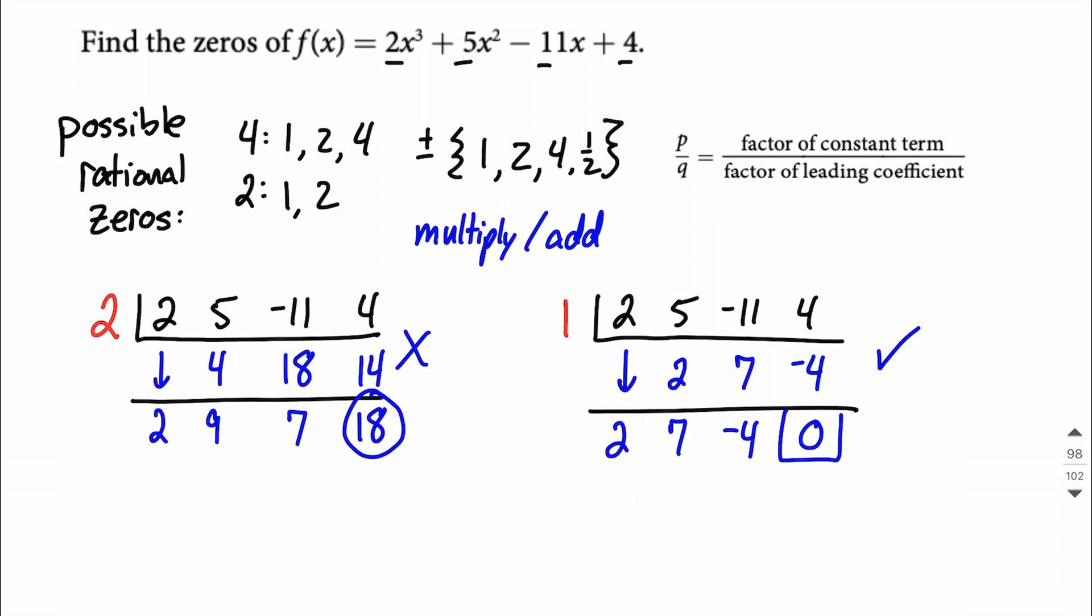So that indicates to us that one of our zeros is positive 1, that value out in front. Now let's think about factoring this. All right, because zeros and factors kind of go hand in hand. Because 1 worked out to have a remainder of 0, that tells us it's a 0. It also tells us that we get a factor. x minus 1 is going to be one of our factors.